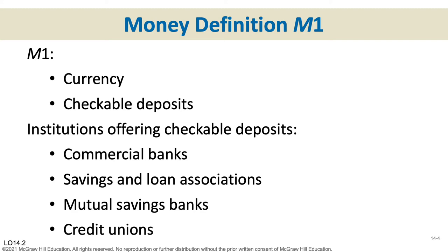When we talk about money in the rest of this class, we are always going to be focused on M1 money. This is the only definition of money we use, and it's really easy to calculate. M1 money only has two things in it: currency and checkable deposits. Currency is the money in our pockets — the actual dollar bills or coins we have in our possession that we use to buy stuff.